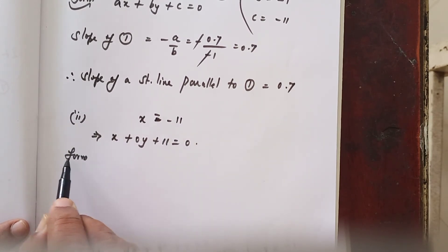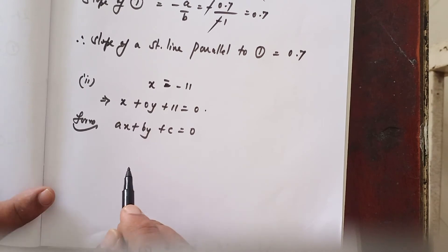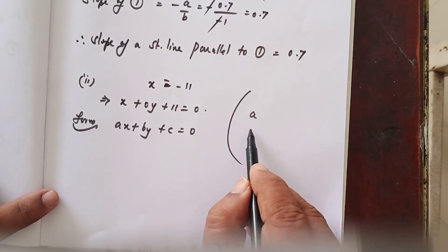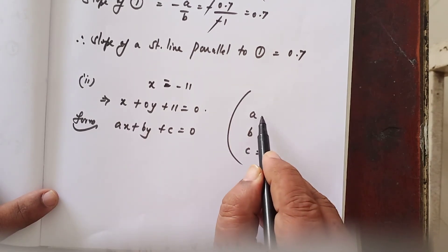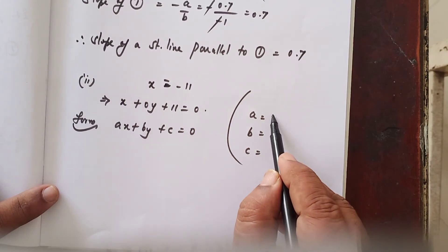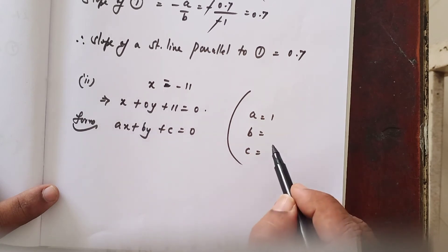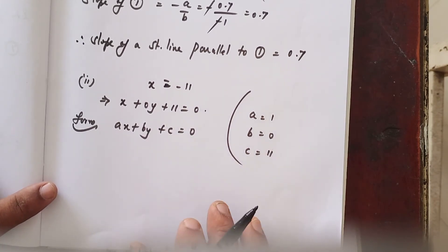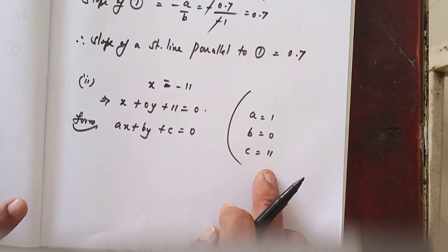You write the form ax plus by plus c equal to 0. Then, write the values of a, b and c. So, a is coefficient of x that is 1, b is the coefficient of y that is 0, c is the constant term 11. For finding that slope, c is not necessary. Anyway, write that one.